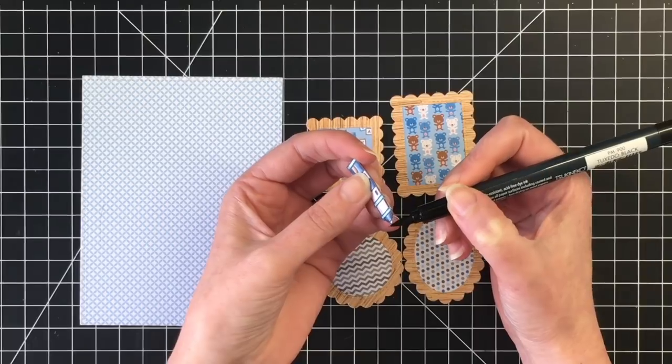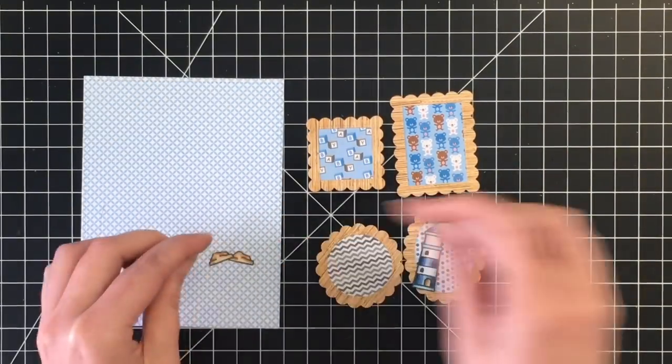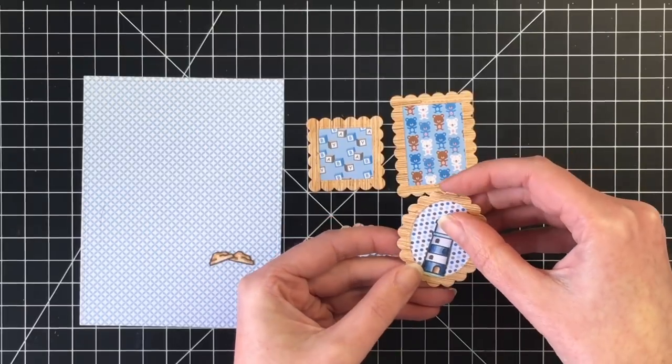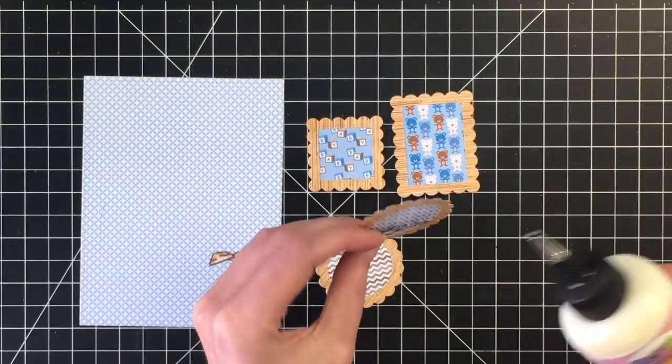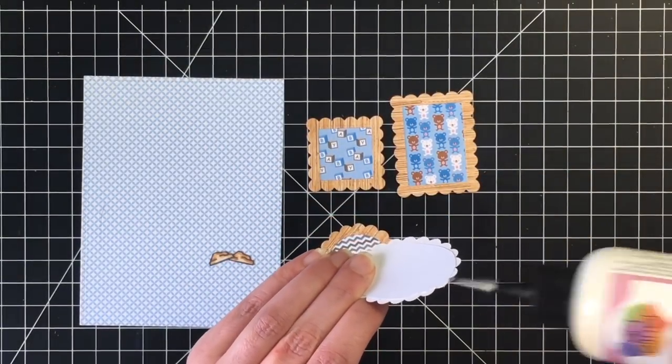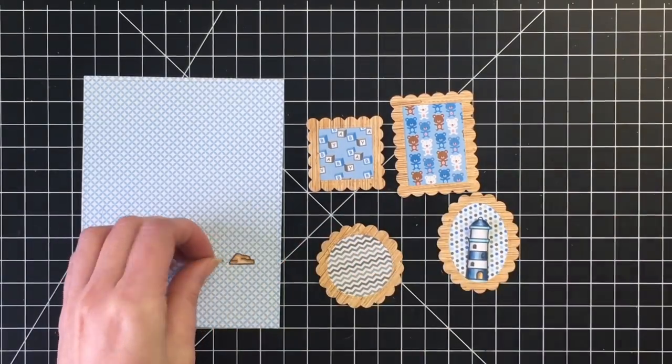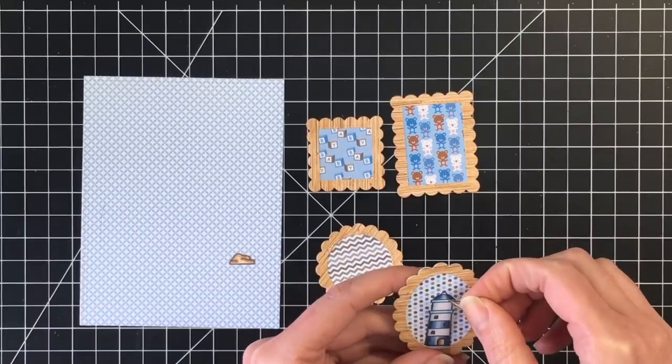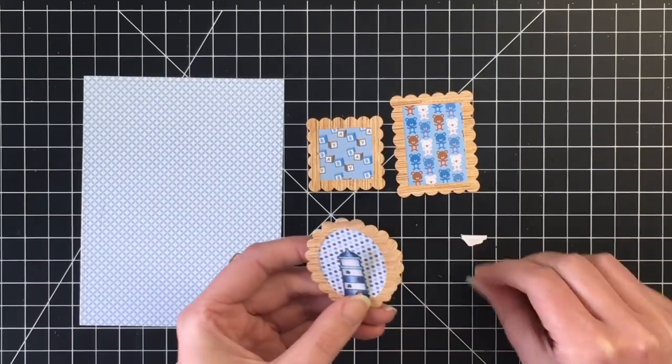I am going to go around the edges of all of my little stamped images here with my Memento Tuxedo black marker. It just hides the imperfections from the fussy cutting. Because I cut these along the black line, I just want to give a nice clean side to all of the images.